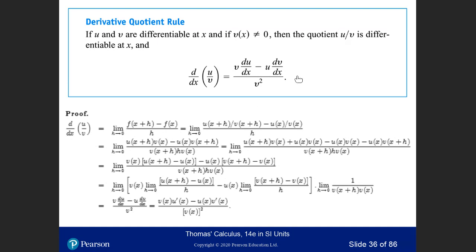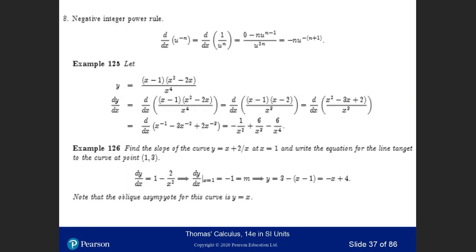So the derivative of the quotient u/v equals v times du/dx minus u times dv/dx, all divided by v². You first take the derivative of the numerator function u(x) and multiply by the denominator v(x), then subtract the derivative of the denominator times u(x), and divide by the square of the denominator. That's the quotient differentiation rule.